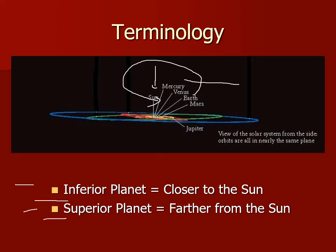In the solar system, Mercury and Venus are inferior to Earth — they are closer to the sun. The rest of the planets, Mars, Jupiter, Saturn, Uranus, Neptune, etc., are superior because they're farther from the sun than Earth. Mercury, Venus, Earth, and Mars are all inferior to Jupiter. Saturn, Uranus, and Neptune are superior to Jupiter. Most asteroids are inferior to Jupiter and superior to Mars — that's the asteroid belt. So inferior and superior just mean closer to or farther from the sun than a given reference point.